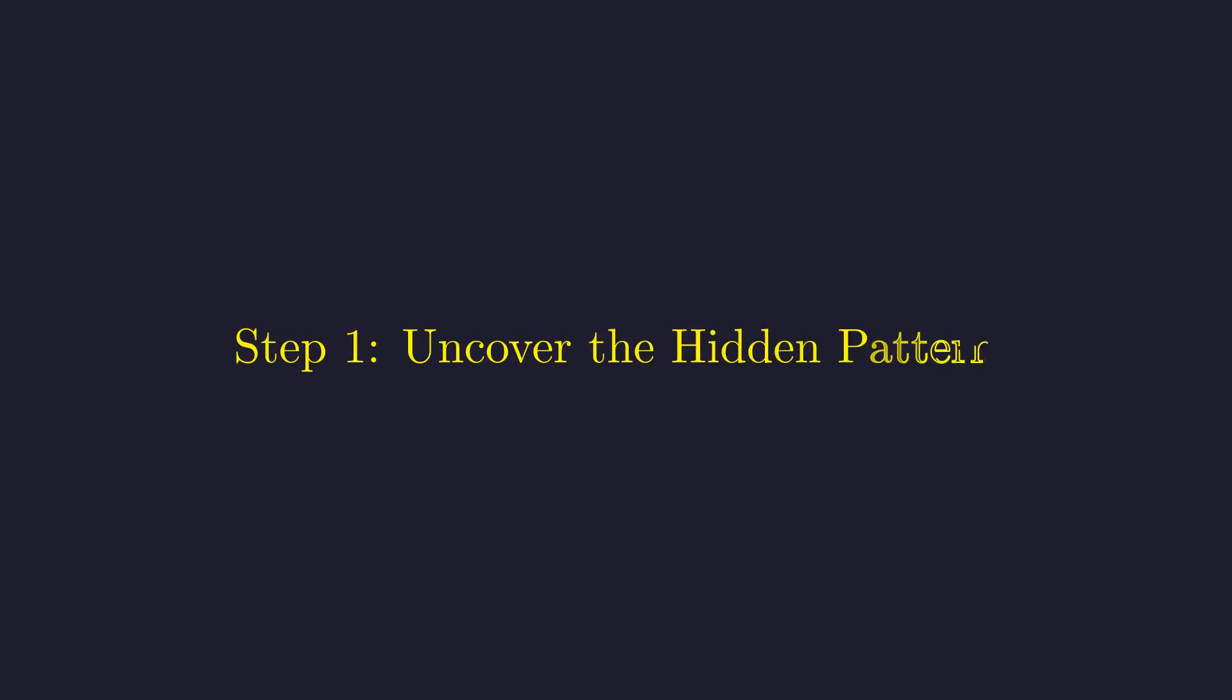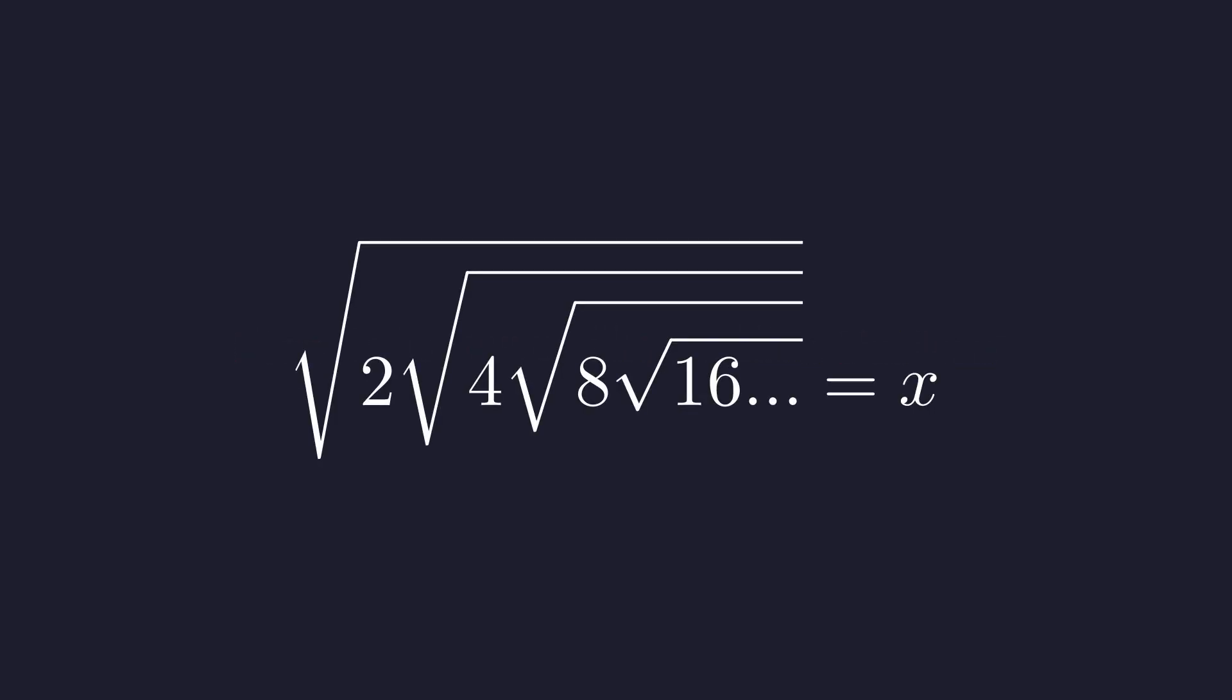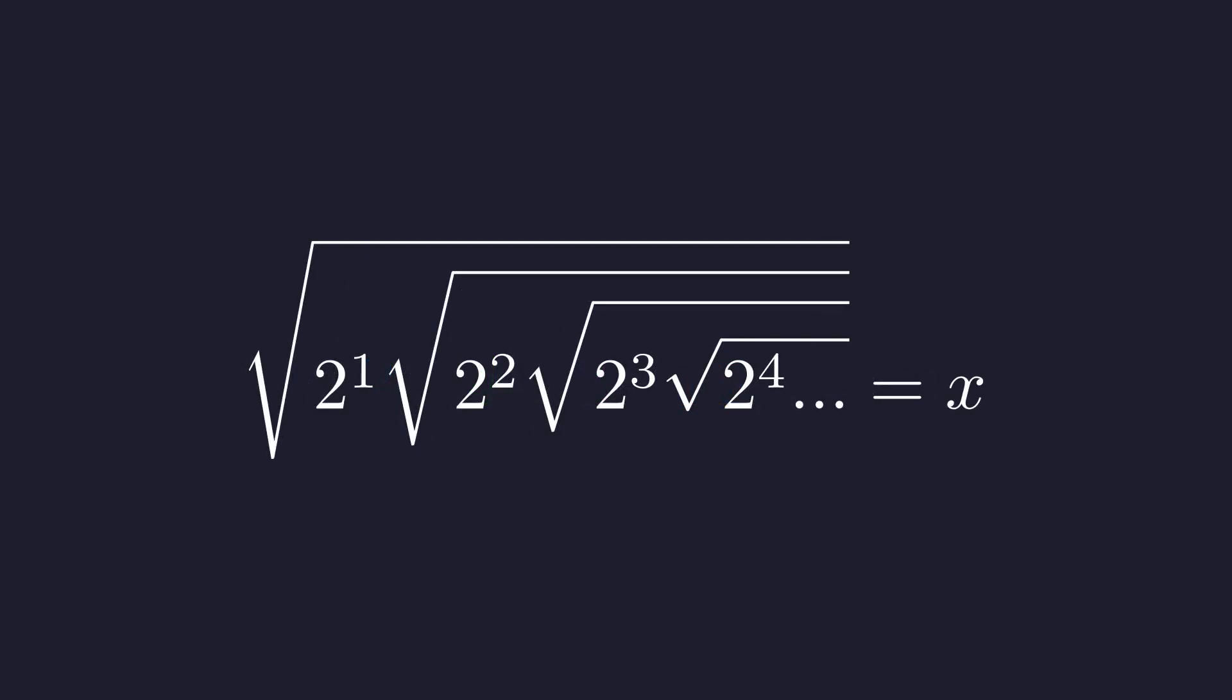The first step is to notice the pattern in these numbers. Look at the numbers inside: 2, 4, 8, 16. These aren't random. They're successive powers of 2, so we can rewrite this using exponential form.